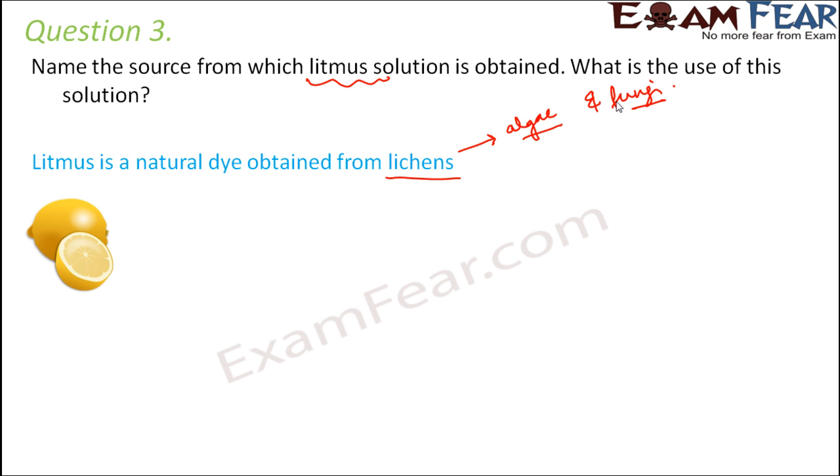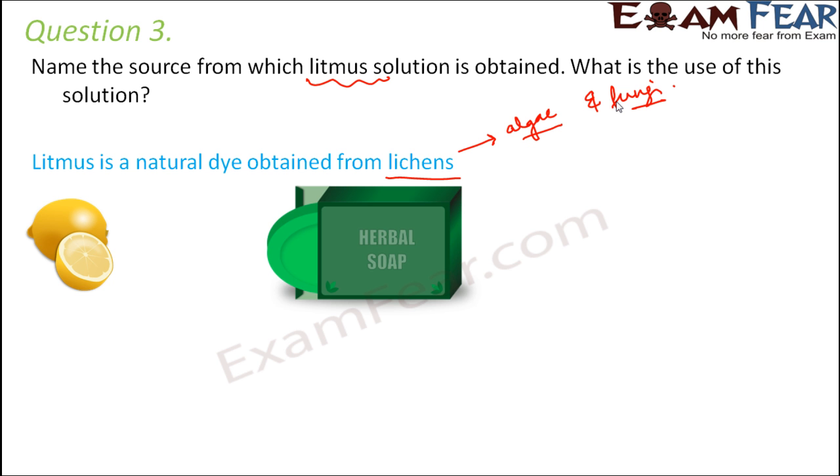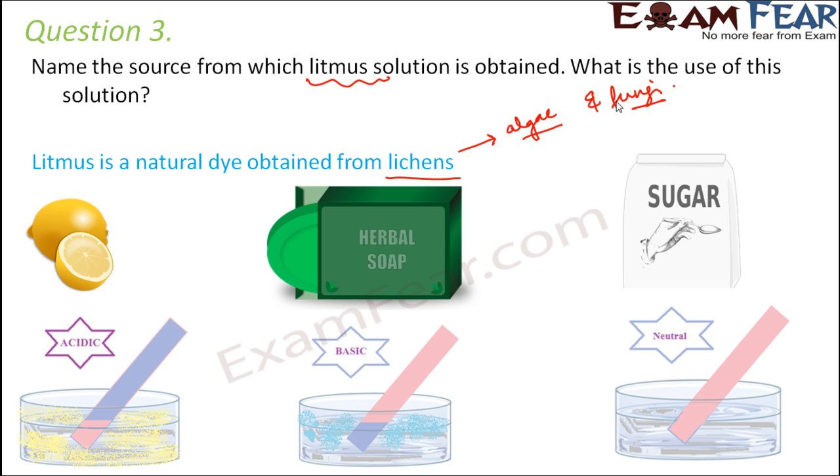So how do we use litmus? It is used as an indicator to check or to test the acidity of a substance. For example, if you take different substances like lemon, soap, sugar and you perform the litmus test for each of them, you will see that by looking at the change in color of the litmus paper, you can decide which one is acidic, which one is basic and which is neutral.